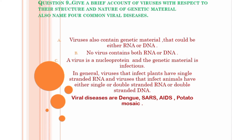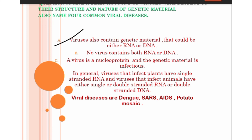Ninth question: give a brief account of viruses with respect to their structure and nature of genetic material. Viruses contain genetic material that could be either RNA or DNA — not both at the same time. A virus is a nucleoprotein in nature, meaning it has nucleic acid as its genetic material, and its outer covering is a protein coat. In general, viruses that infect plants have single-stranded RNA, and viruses that infect animals have either single or double-stranded RNA, or double-stranded DNA.